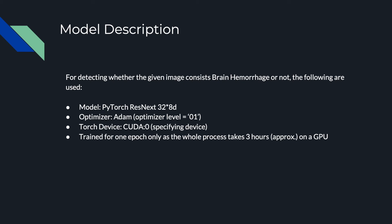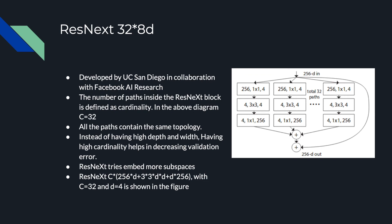The ResNeXt architecture was developed by UC San Diego in collaboration with Facebook AI Research. The number of paths inside a ResNeXt block is defined as cardinality — in the diagram shown, the cardinality is 32. All paths share the same topology. In ResNeXt, instead of increasing depth or width, increasing cardinality helps decrease validation error, and the architecture embeds more subspaces.